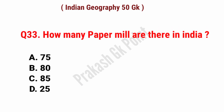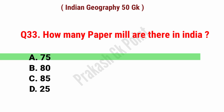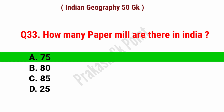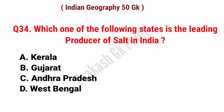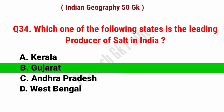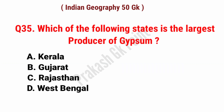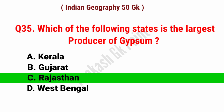How many paper mills are there in India? Answer: option A, 75 paper mills. Which one of the following states is the leading producer of salt in India? Answer: option B, Gujarat. Which one of the following states is the largest producer of gypsum? Answer: option C, Rajasthan.